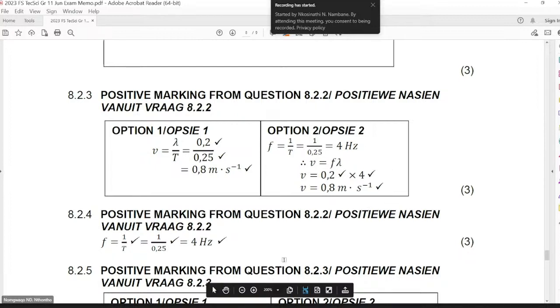We will mark it positively from 8.2.2. Then the frequency. Frequency is 1 over p for substitution and for the answer. Three marks. There you go, three marks.